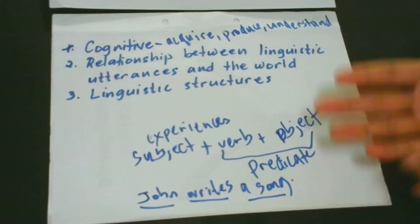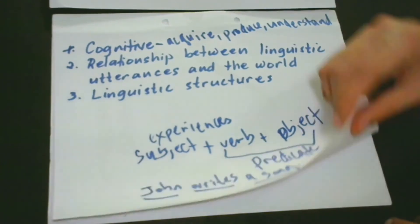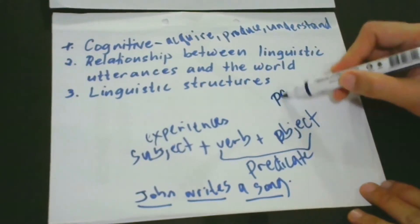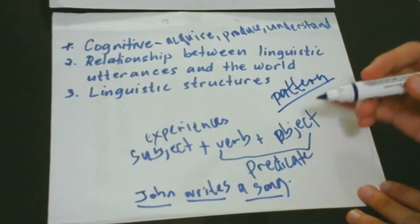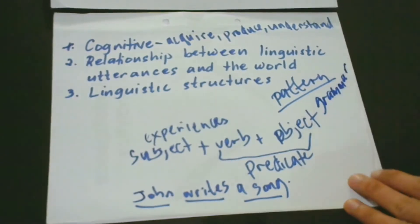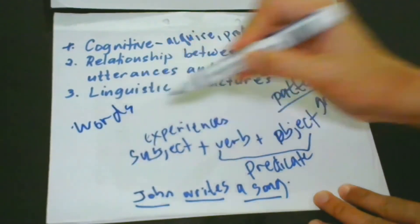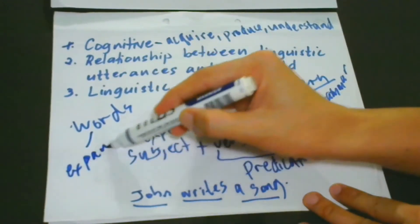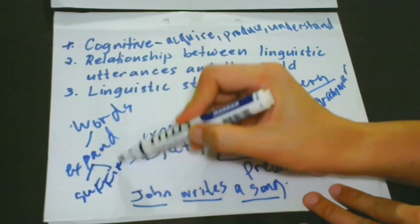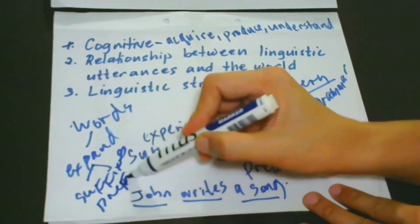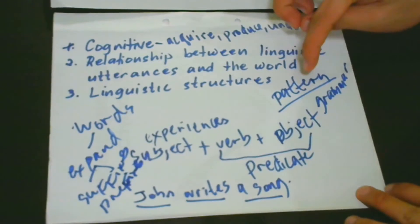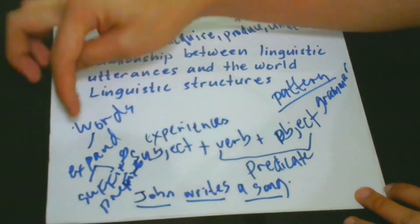This is why there are rules used to understand the pattern of linguistic expressions. When we say 'pattern,' it concerns the grammar structure for sentences. When we deal with words, it has to do with how we expand words — using suffixes and prefixes. As we go along, we will learn more about sentence patterns and word expansions or word derivations.